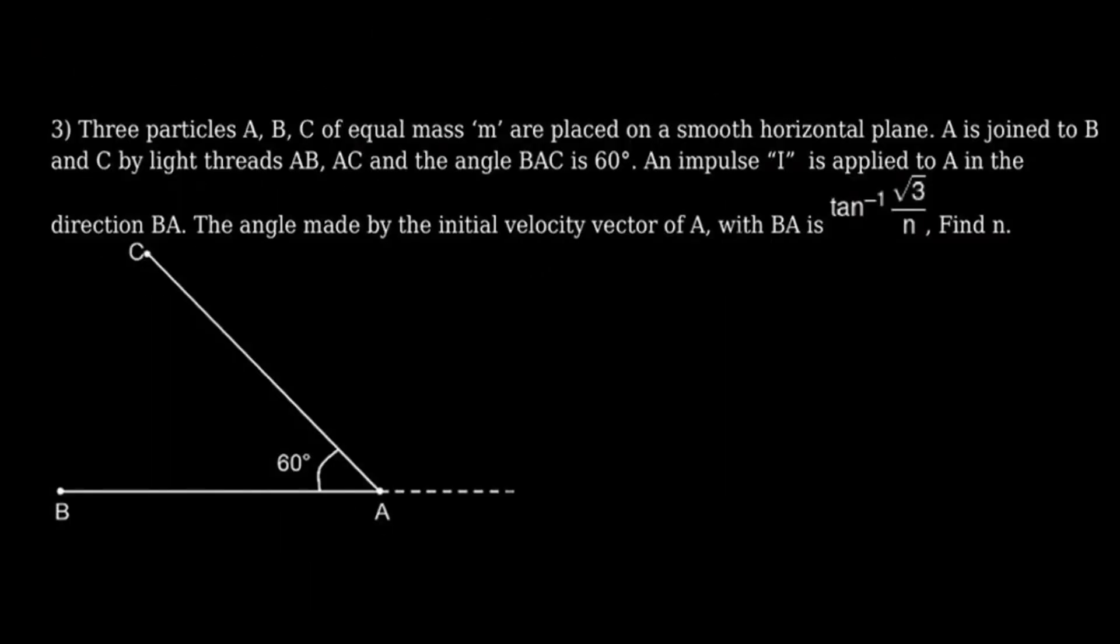The next problem is also related to impulse but now there are strings involved. The question says there are 3 particles of equal mass placed on a smooth horizontal plane. A is joined to B and C by light threads AB, AC and the angle BAC is 60 degrees. An impulse I is applied to A in the direction. The angle made by the initial velocity vector of A with BA is what? You have to find N. Suppose this is the situation. Impulse I is given like this to ball A. This is B and this is C. All have equal masses. These are separate strings, don't take it as a common string, otherwise you may get lost. Deal with them separately.